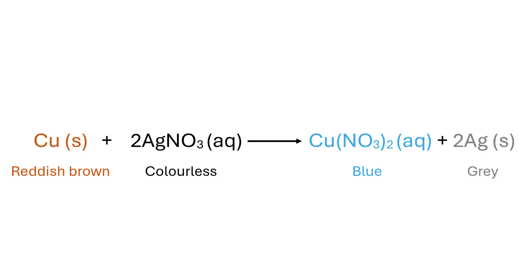The silver ions on the other hand get deposited on the surface of the copper strip in the form of elemental silver atoms.